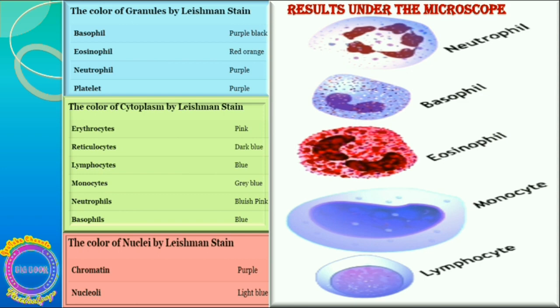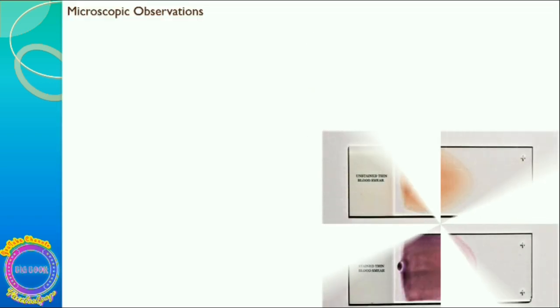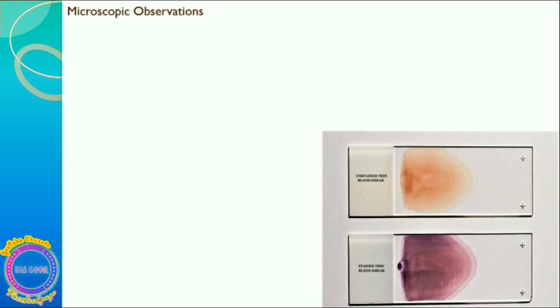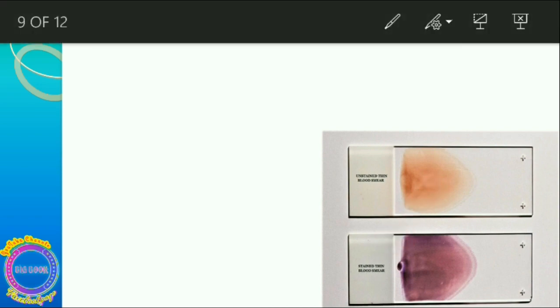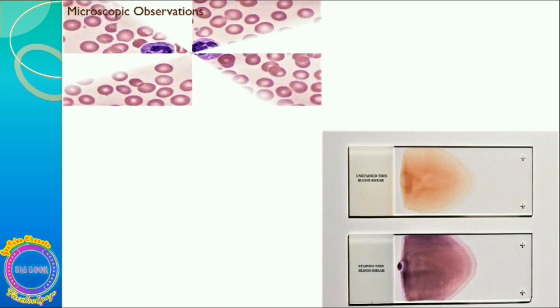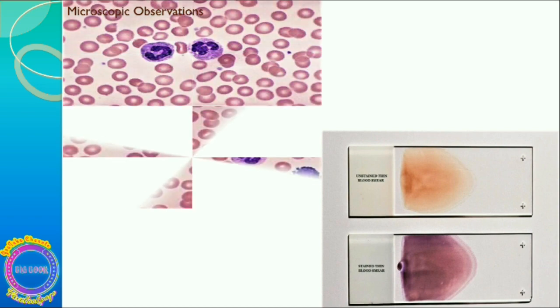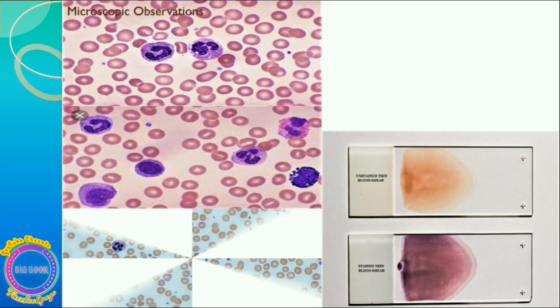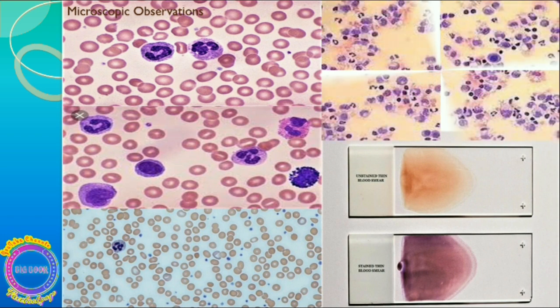For microscopic observations, the first image shows a blood smear without stain, the second shows the blood smear after staining, and the third shows a slide with WBCs visible. These images represent different zooming levels and resolutions, showing how the final slide should appear under the microscope.